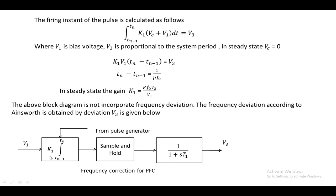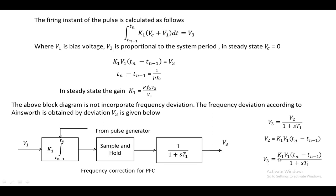To account for frequency deviations, V3 is generated using V1 fed through an integration block, a sample-and-hold block, and a delay block, giving V3 = V2 · 1/(1 + sD1), where V2 is the output of the integrator. Substituting, we get V3 = K1·V1·(TN − TN-1)/(1 + sD1). With this modified V3 taken from the block diagram, if any frequency deviations occur due to disturbances in the system, they will also be taken into consideration when generating pulses to the valve.